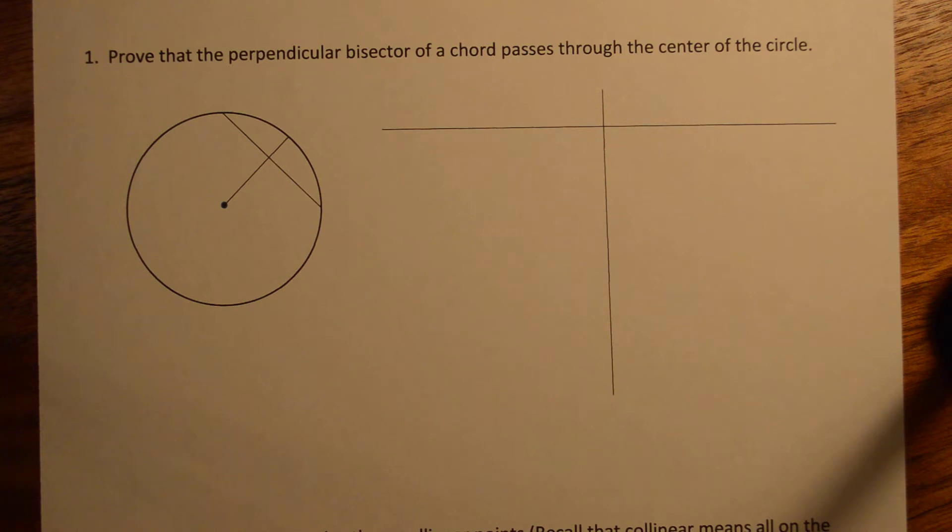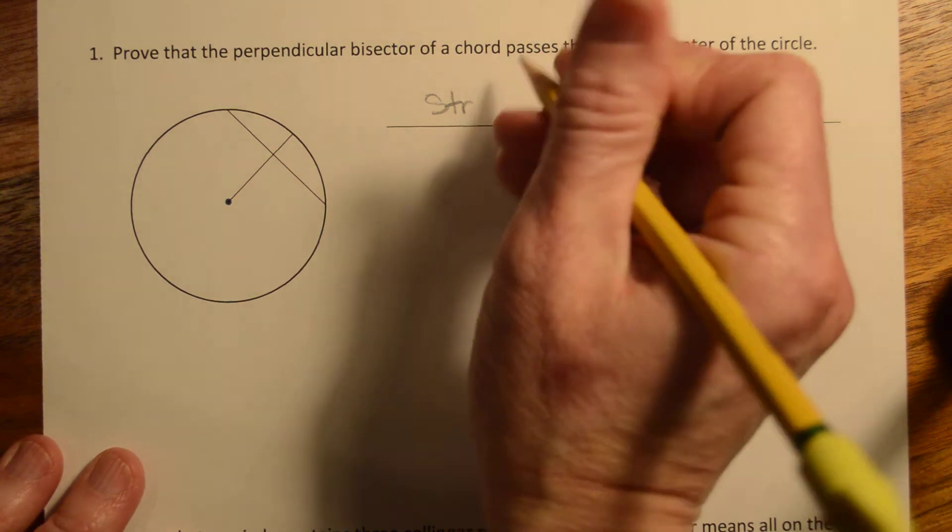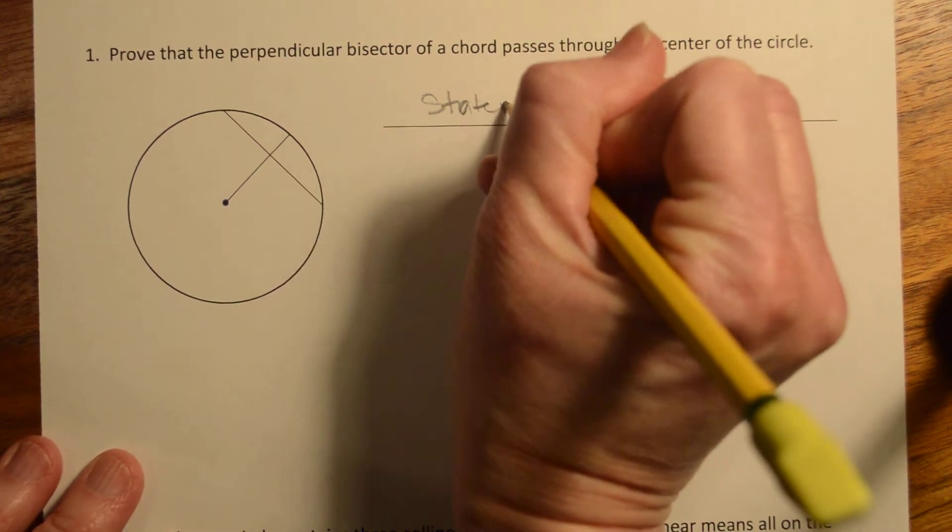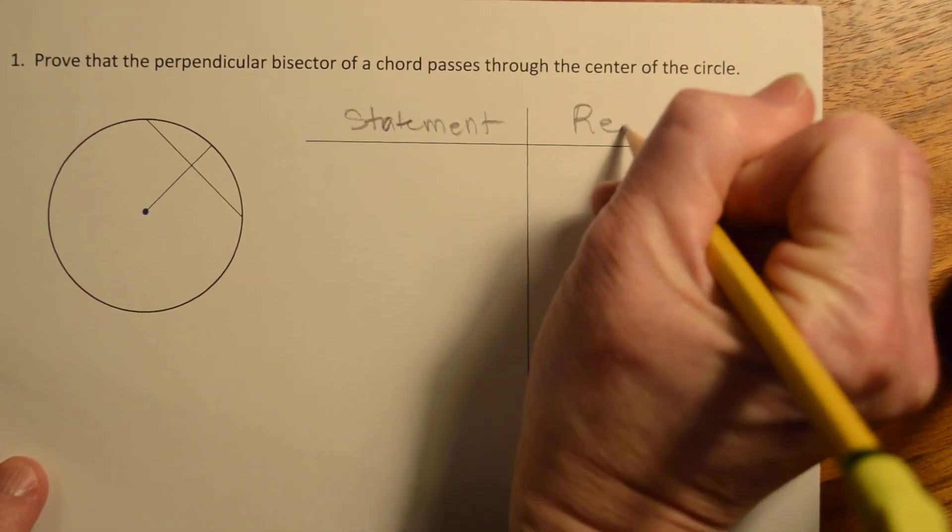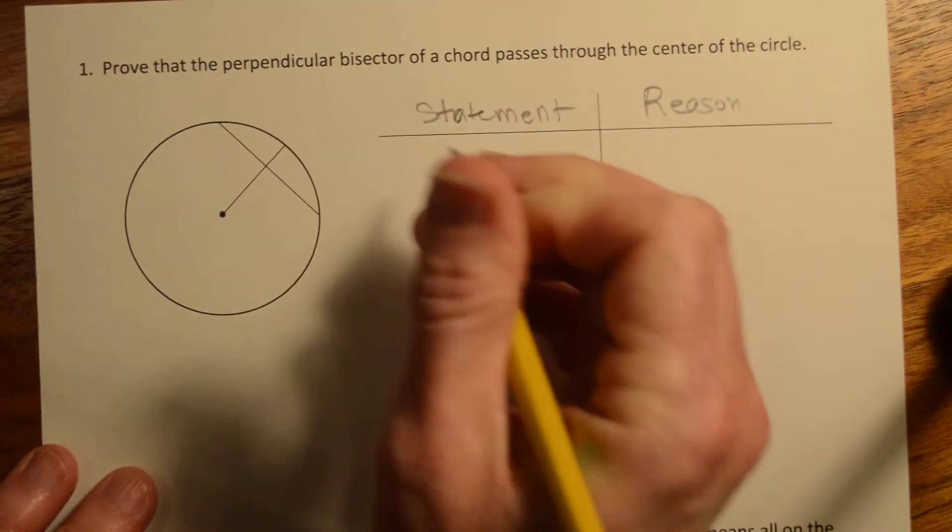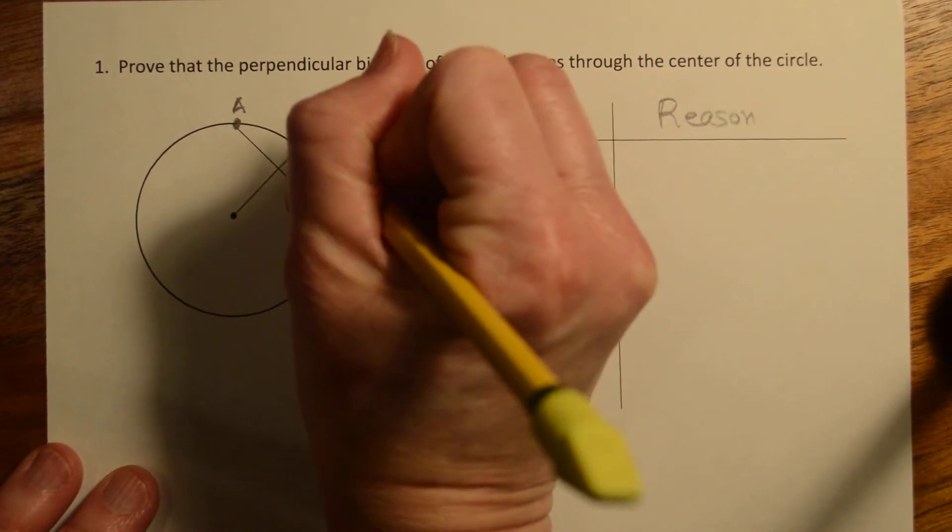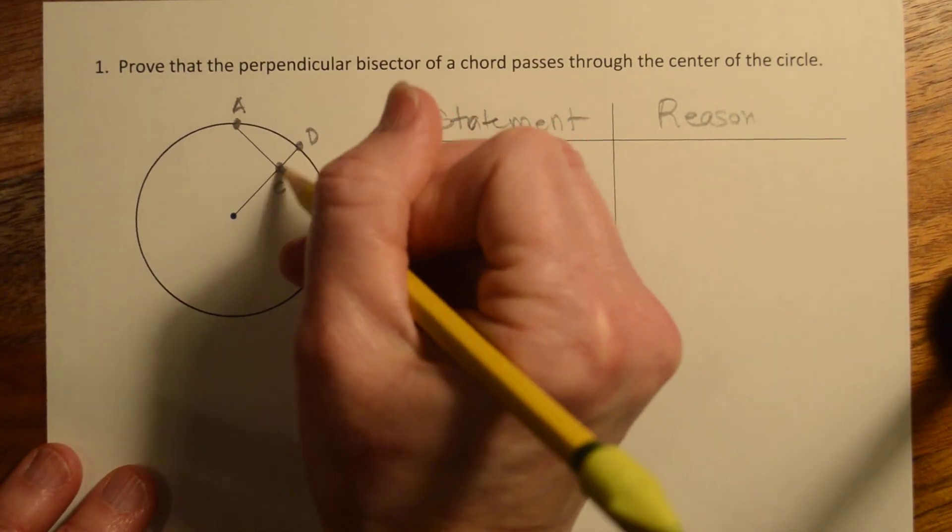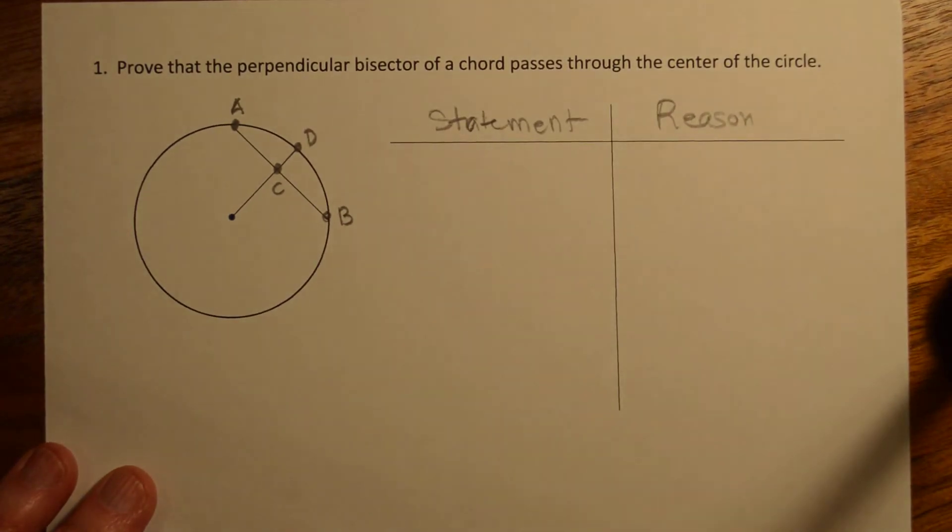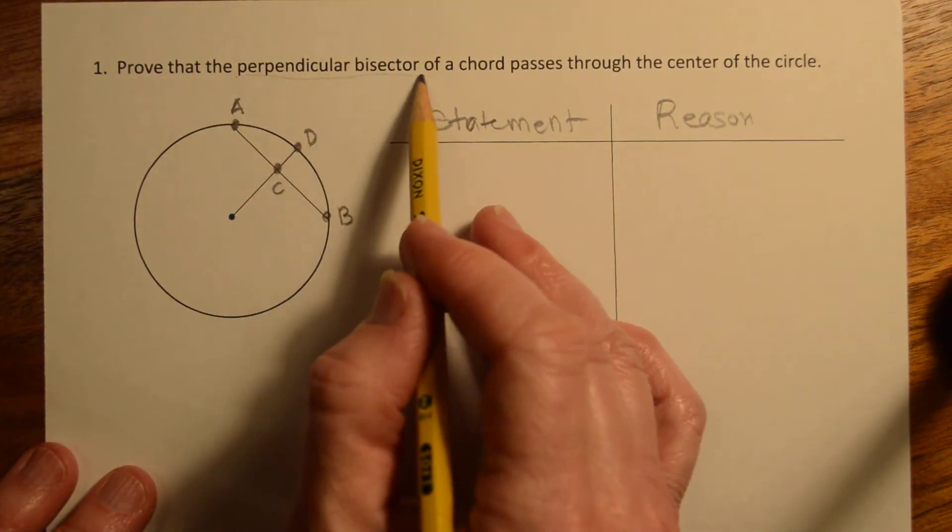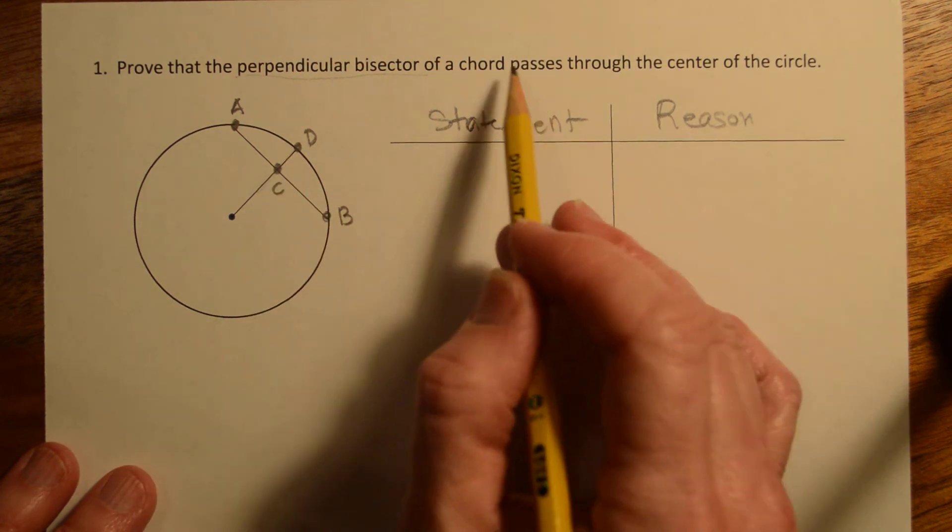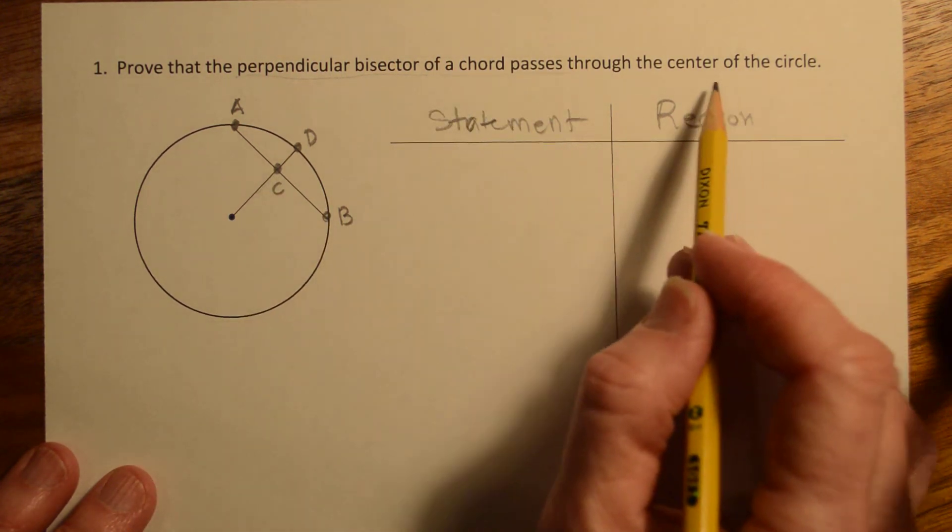So the first one that we're going to do is problem one, which says prove the perpendicular bisector of a chord passes through the center of the circle. So I've got the drawing that they've given here, statement, reason, and in the book they've drawn this as A and B and this is D and C. We know that CD is the perpendicular bisector of AB. So it says prove that the perpendicular bisector, so we have the perpendicular bisector of a chord passes through the center of the circle.